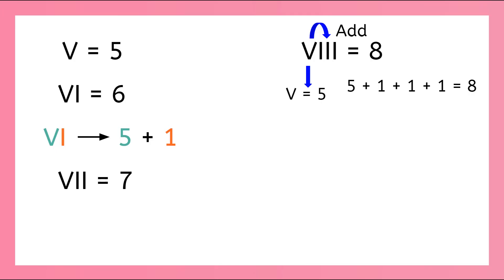But what do you notice about our symbol for 8? We have three I's in a row. So how do we write 9? We can't just add another I to 8. We need to know the symbol for 10 — X is the Roman numeral symbol for 10. Just like we wrote 4 as 5 minus 1, we can write 9 as 10 minus 1, which looks like IX.